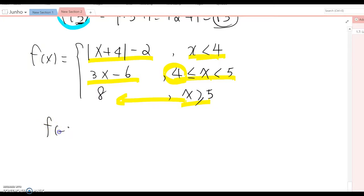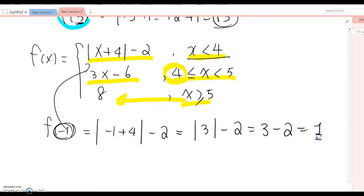Okay, first one: f(-1). As you know, negative 1 is smaller than 4, so use this function. Absolute value of negative 1 plus 4 minus 2, which means 3 minus 2 equals 3 minus 2, so it becomes 1.